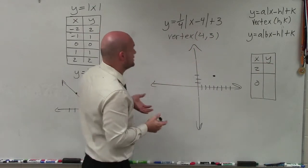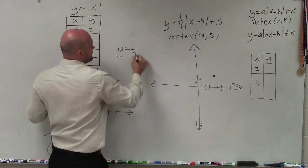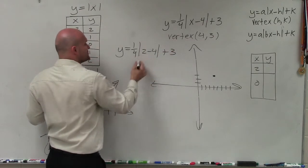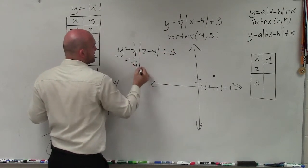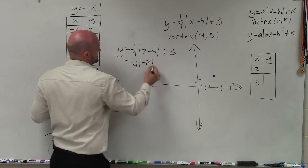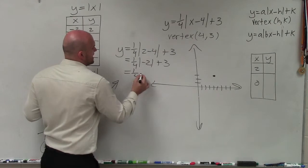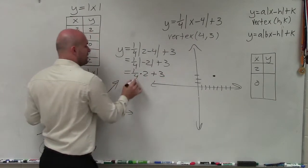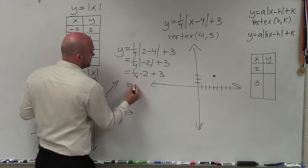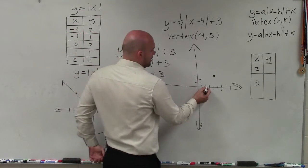So now what I want to do is evaluate what exactly are those values? So for my y-value when x equals 2, I say y equals one-fourth absolute value of 2 minus 4 plus 3. So 2 minus 4 is negative 2. I'll do it one step at a time. Absolute value of negative 2 is 2. So one-fourth times 2 plus 3. Well, one-fourth times 2 is going to be one-half. One-half plus 3 is going to equal 3.5, or 3 and a half. So over 2, I'm going to go up 1, 2, 3, and a half.